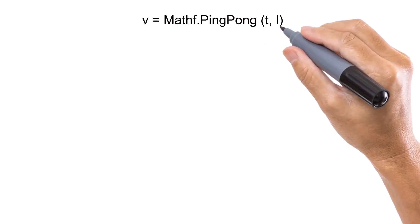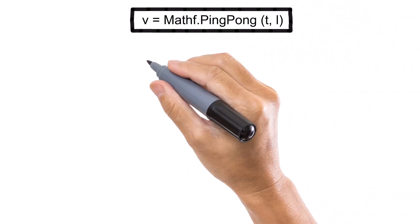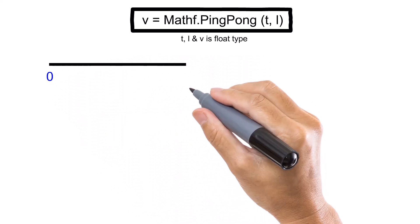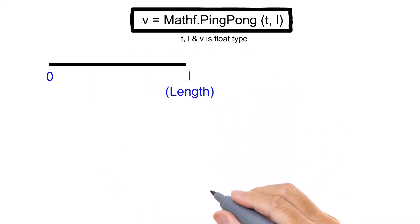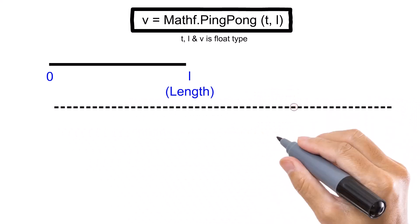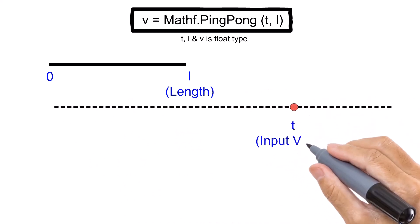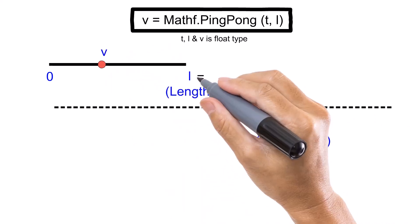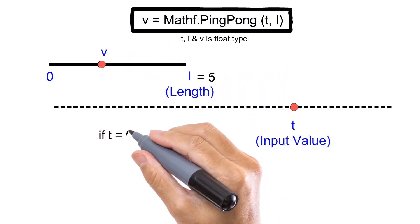The Mathf.PingPong function returns a value that oscillates between 0 and length, following a ping-pong pattern. As t varies from 0 to length, the function returns a value that starts at 0, increases linearly up to length, and then decreases back to 0 in a smooth oscillating motion as t crosses the length value.